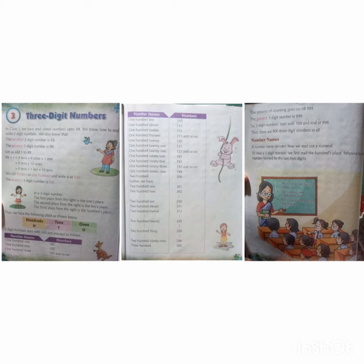So let us add 1 to 99. That is 99 plus 1 equals 9 tens plus 9 ones plus 1 one, that is 9 tens plus 10 ones. So we write 9 tens plus 1 ten equals 10 tens. We call 10 tens as 100 and we write it as 100. The smallest three digit number is 100. Always remember: the smallest two digit number is 10, the greatest two digit number is 99, and the smallest three digit number is 100.